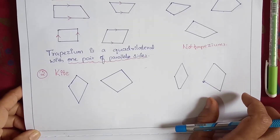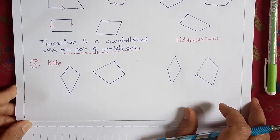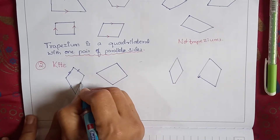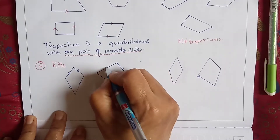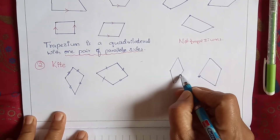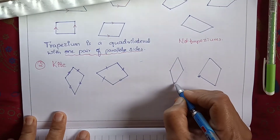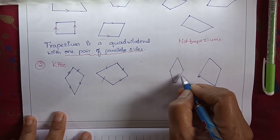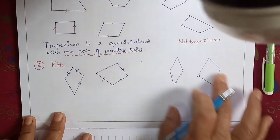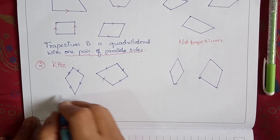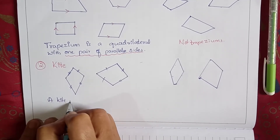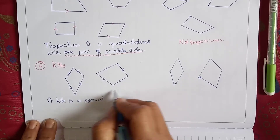Now we will discuss about the kite. It is a kind of rhombus and it is a special type of quadrilateral in which two adjacent sides are equal in length. Here they are not parallel — they are equal in length. This kind of quadrilateral is known as a kite. If the adjacent sides are not equal in length, it is not a kite. So a kite is a special type of quadrilateral.